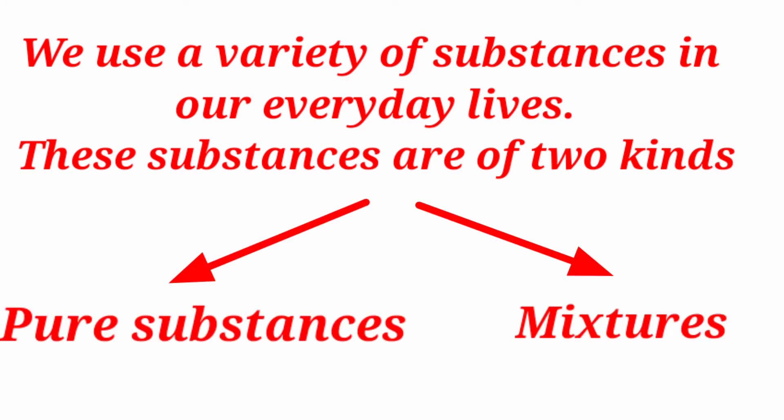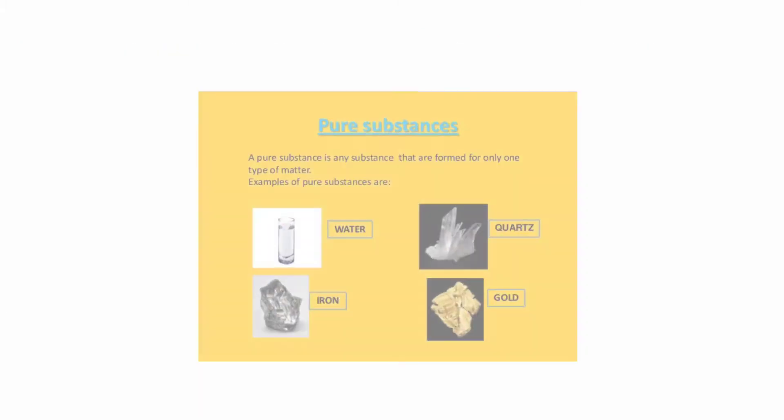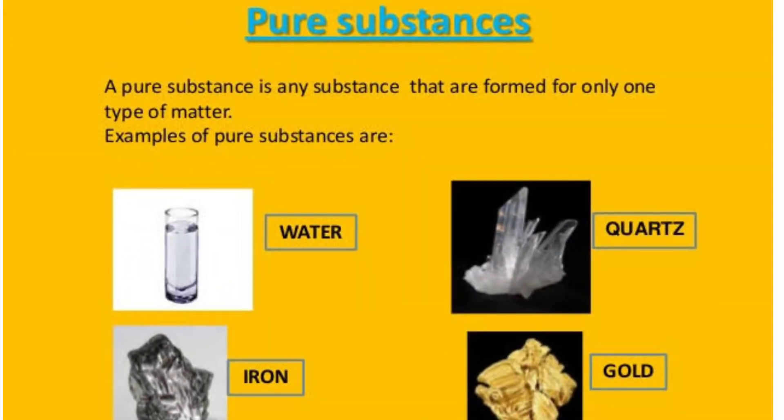So what is a pure substance? A pure substance is formed only by one kind of material. Substances that contain only one kind of particles are called pure substances. Examples include pure water and 24-karat gold.